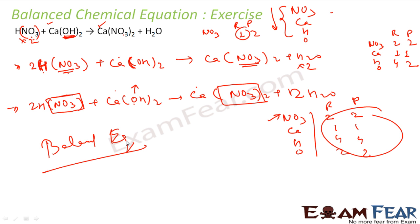The trick here was: the oxygen inside NO3 we will not count separately because we already counted it as part of NO3. But we take oxygen from Ca(OH)2 because we did not count the OH as a polyatomic unit.